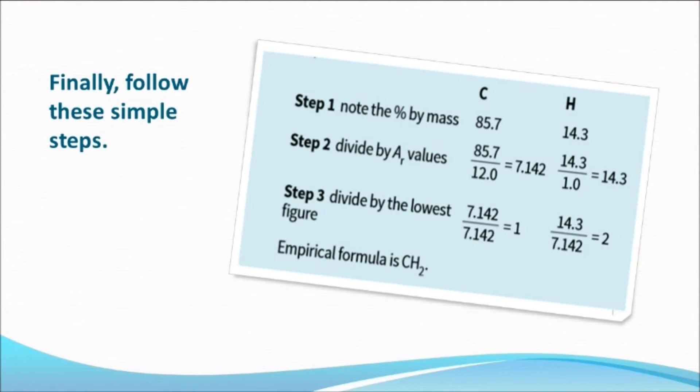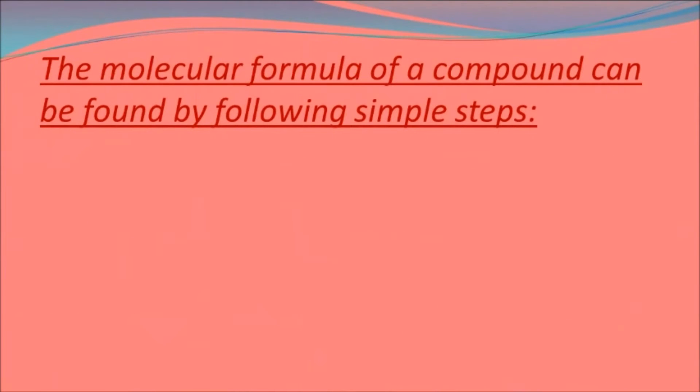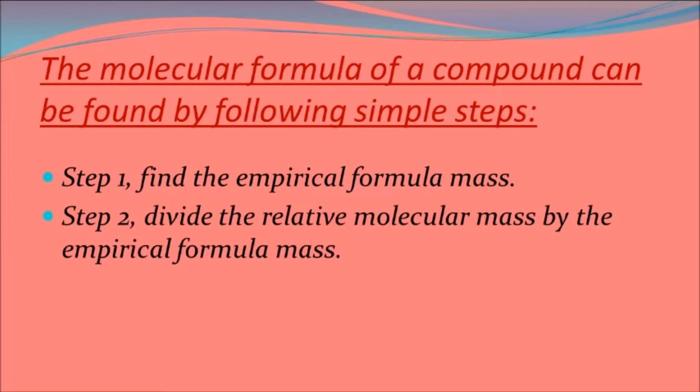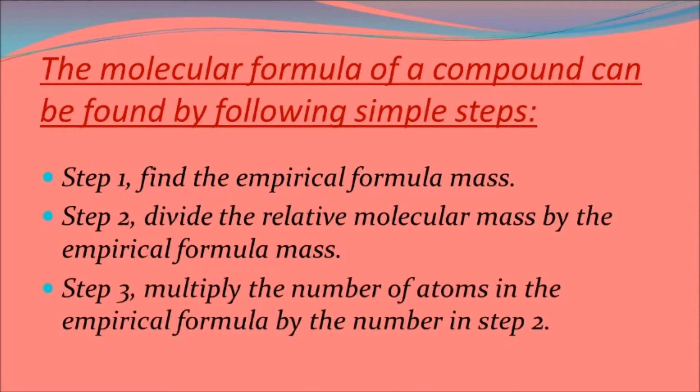To find the molecular formula of a compound, we follow simple steps. Step 1: find the empirical formula mass. Step 2: divide the relative molecular mass by the empirical formula mass. And finally, Step 3: multiply the number of atoms in the empirical formula by the number in Step 2.